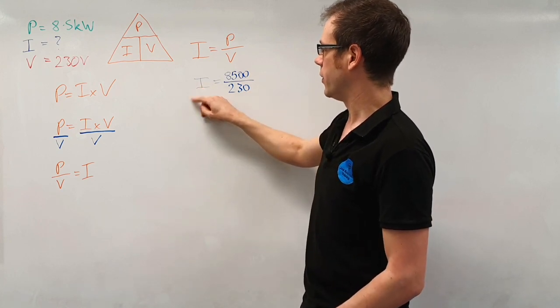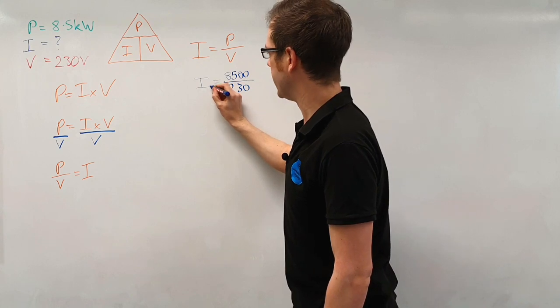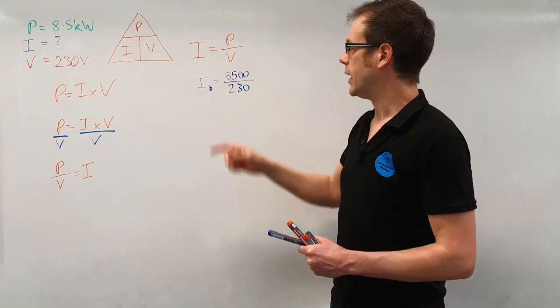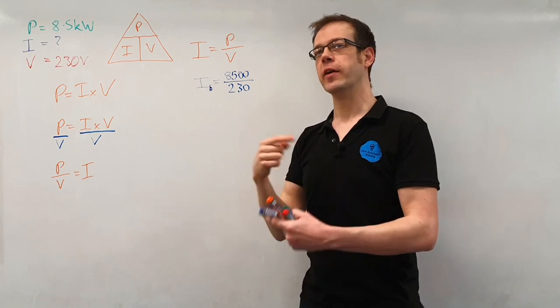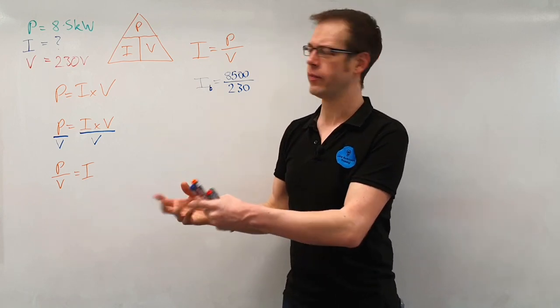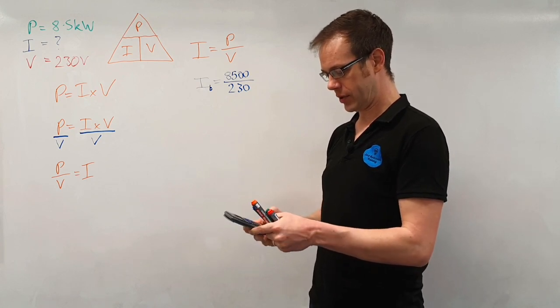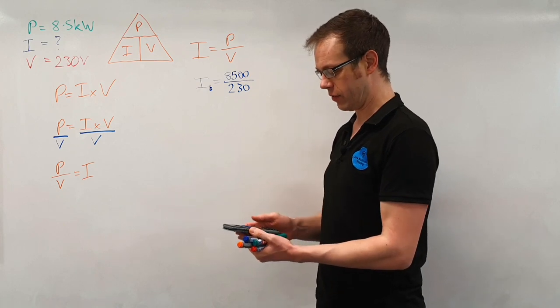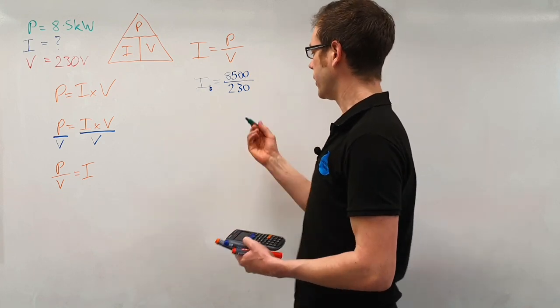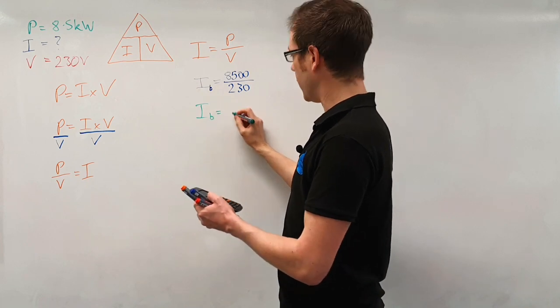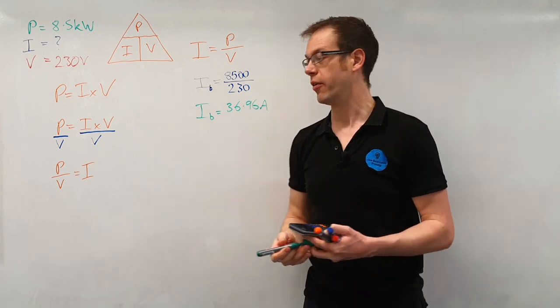So there's our power, there's our voltage and that's going to give us our current. Just a little word on this, if you are doing this for design work what you'll find is that this will actually be called IB with a little b in the subscript. IB is equal to 8500 divided by 230 and that just means design current. So let's do that calculation, 8500 divided by 230 and that gives us a value of 36.96. So we've got 36.96 amps. The current that our shower is going to draw according to our design calculation will be 36.96 amperes, that's how much current that circuit is going to draw.